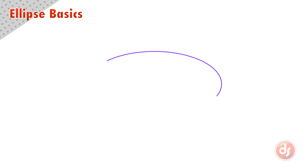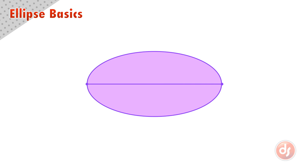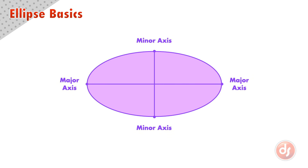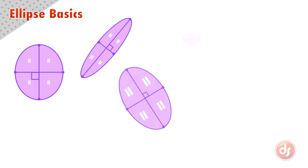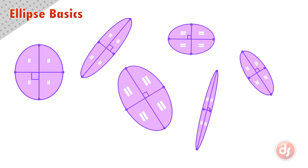We can perceive an ellipse as a flat two-dimensional oval. If we divide it in half by two lines going through the widest points of the ellipse, the longer of these lines is the major axis and the smaller is the minor axis. Notice that the major and minor axes cross the center of the ellipse and are at right angles to each other, dividing the ellipse into four equal sections. These principles will be true of any ellipse.